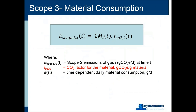For scope 3 emissions from material consumption: the model estimates material consumption at the plant at any time. Based on a user-supplied CO2 factor for that particular material or chemical, consumption is multiplied by that factor to calculate CO2-equivalent emissions for scope 3. That is a high-level overview of how scope 1, scope 2, and scope 3 emissions are calculated in the model.